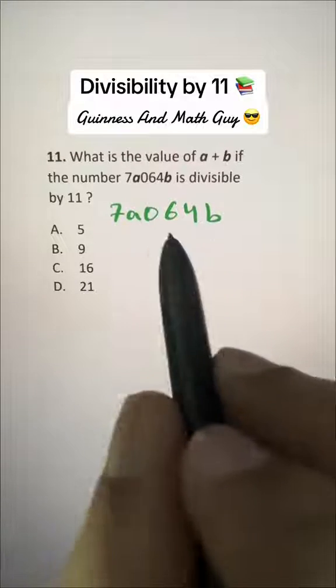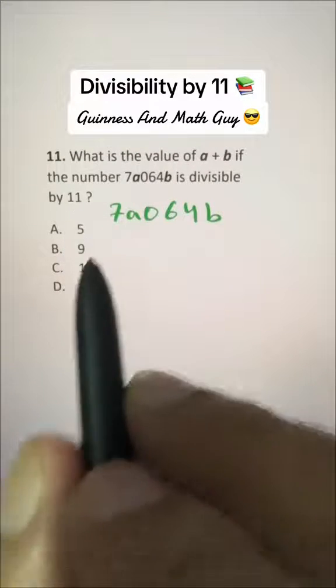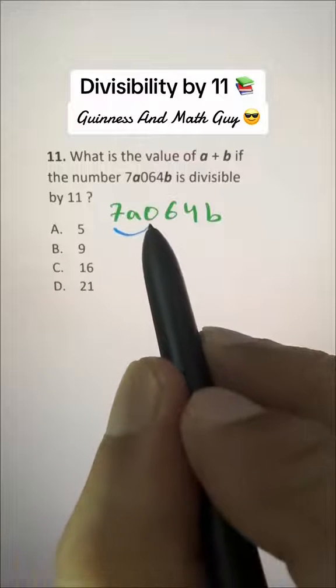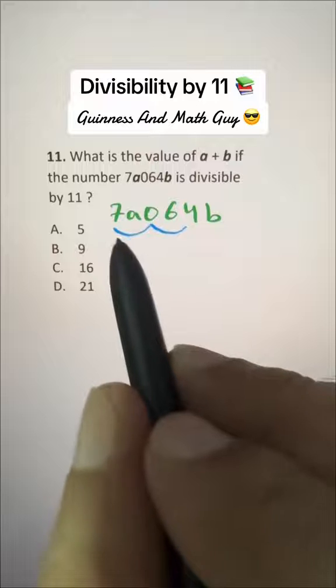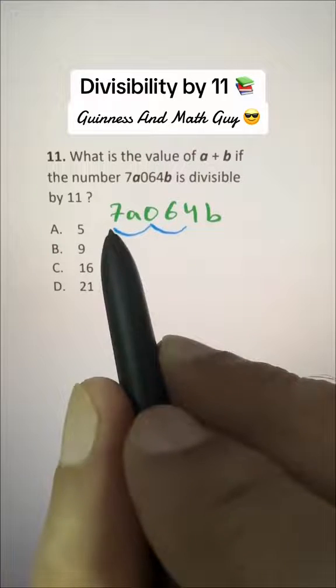Now, when a number is divisible by 11, you take the alternate digits and add them. These are odd positions: 7 plus...